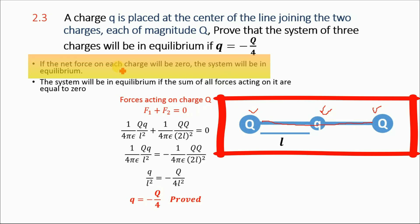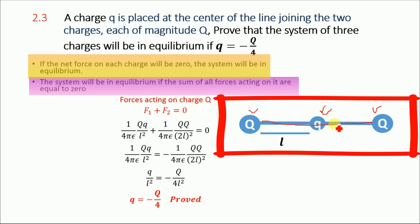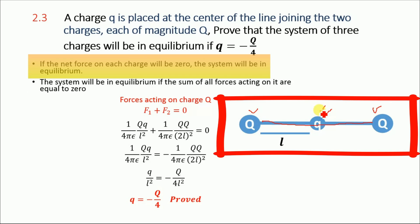We know that the system will be in equilibrium if the net force on each charge is equal to zero. The force acting on each of the three charges must equal zero. If the sum of all forces acting on a charge is equal to zero, the system is considered to be in the state of equilibrium. We need to prove that this small charge q equals minus Q divided by 4.